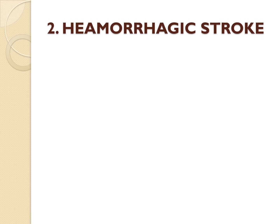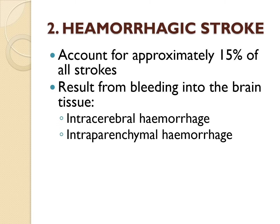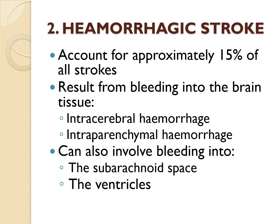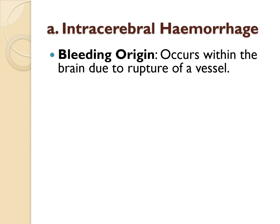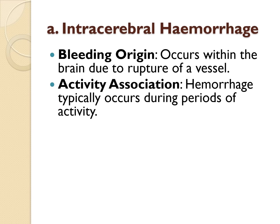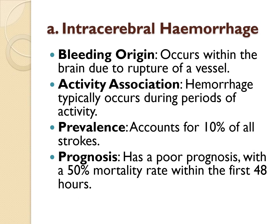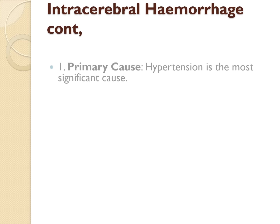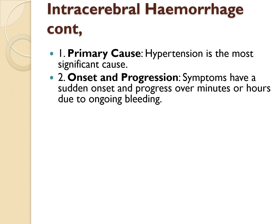Let's now discuss the other type of stroke — hemorrhagic stroke. Hemorrhagic stroke accounts for about 15% of all strokes and results from bleeding into the brain tissue. There are two main types: intracerebral hemorrhage and subarachnoid hemorrhage. Intracerebral hemorrhage is bleeding within the brain caused by rupture of a vessel. It accounts for 10% of all strokes, with hemorrhage occurring during periods of activity. The prognosis is poor, with 50% mortality within the first 48 hours. Hypertension is the most important cause, with sudden onset of symptoms progressing over minutes or hours due to ongoing bleeding.